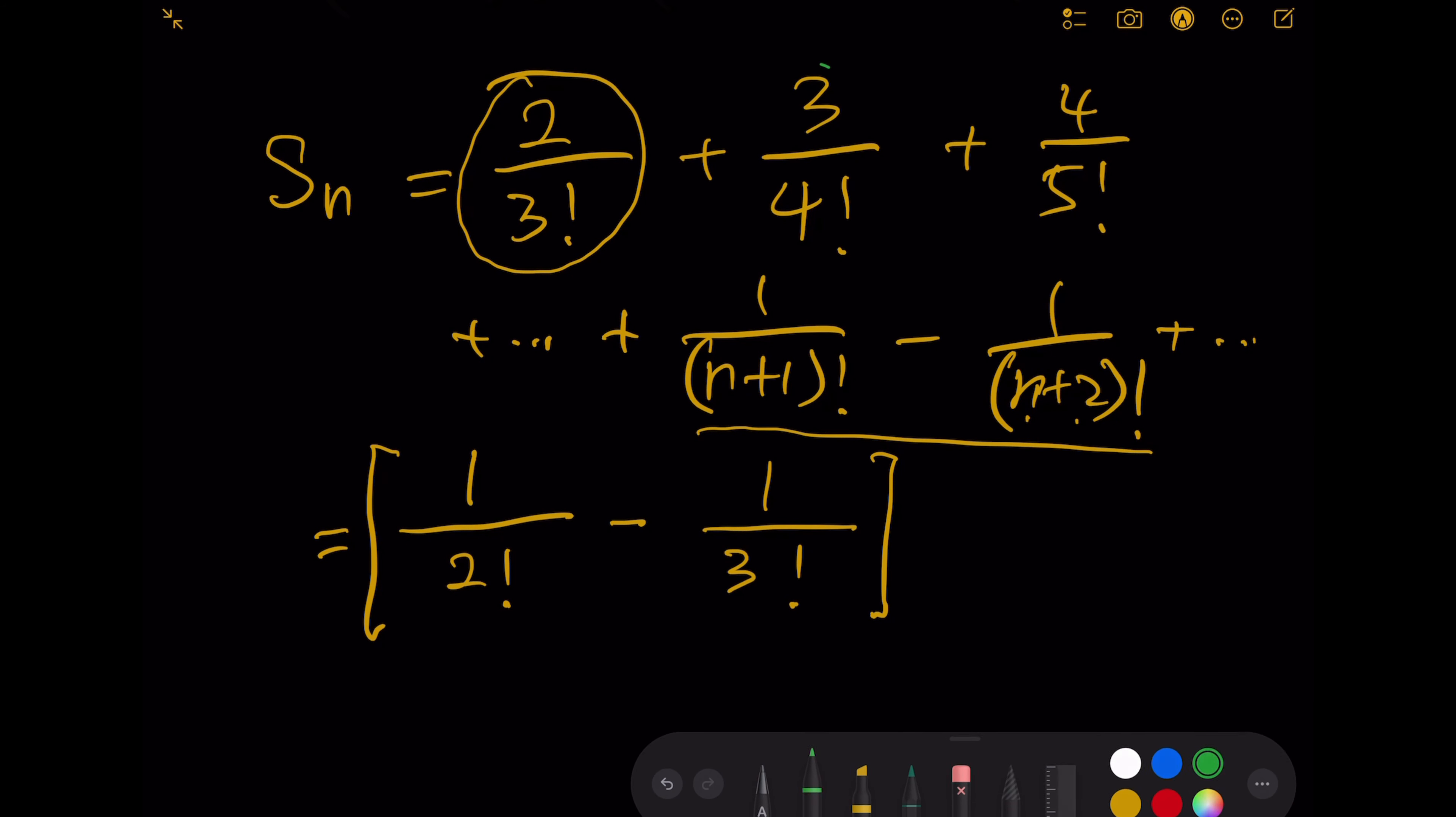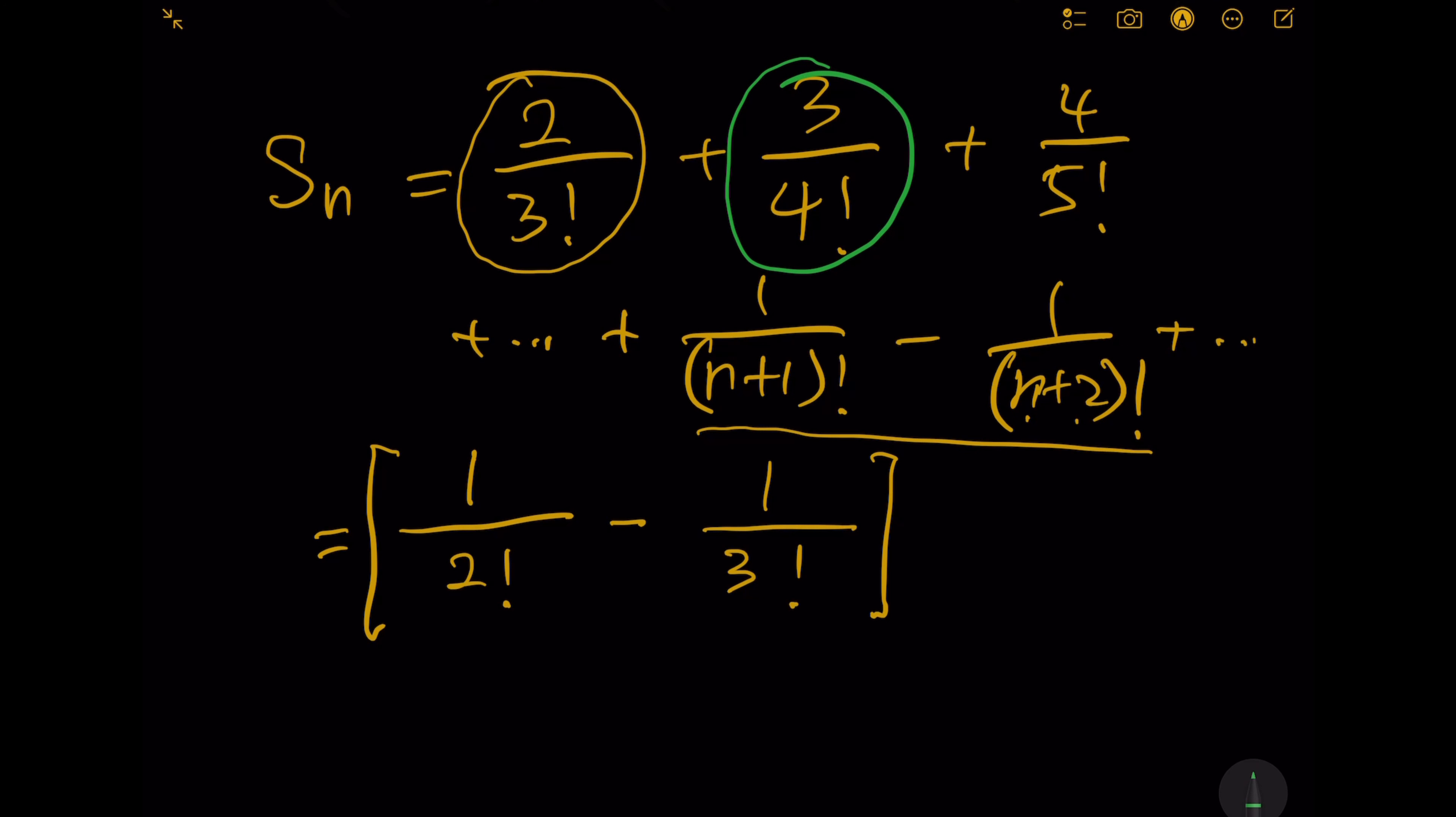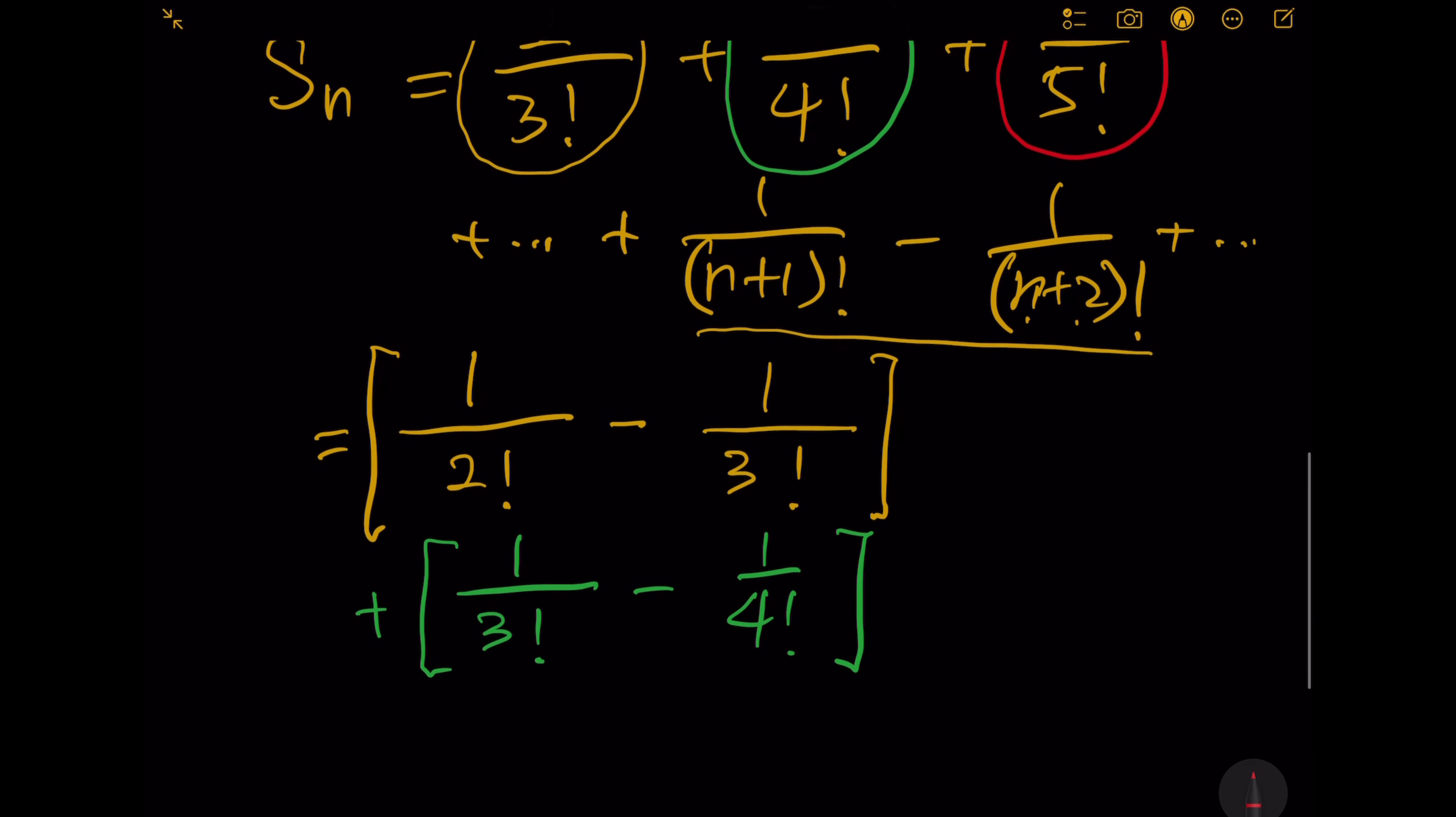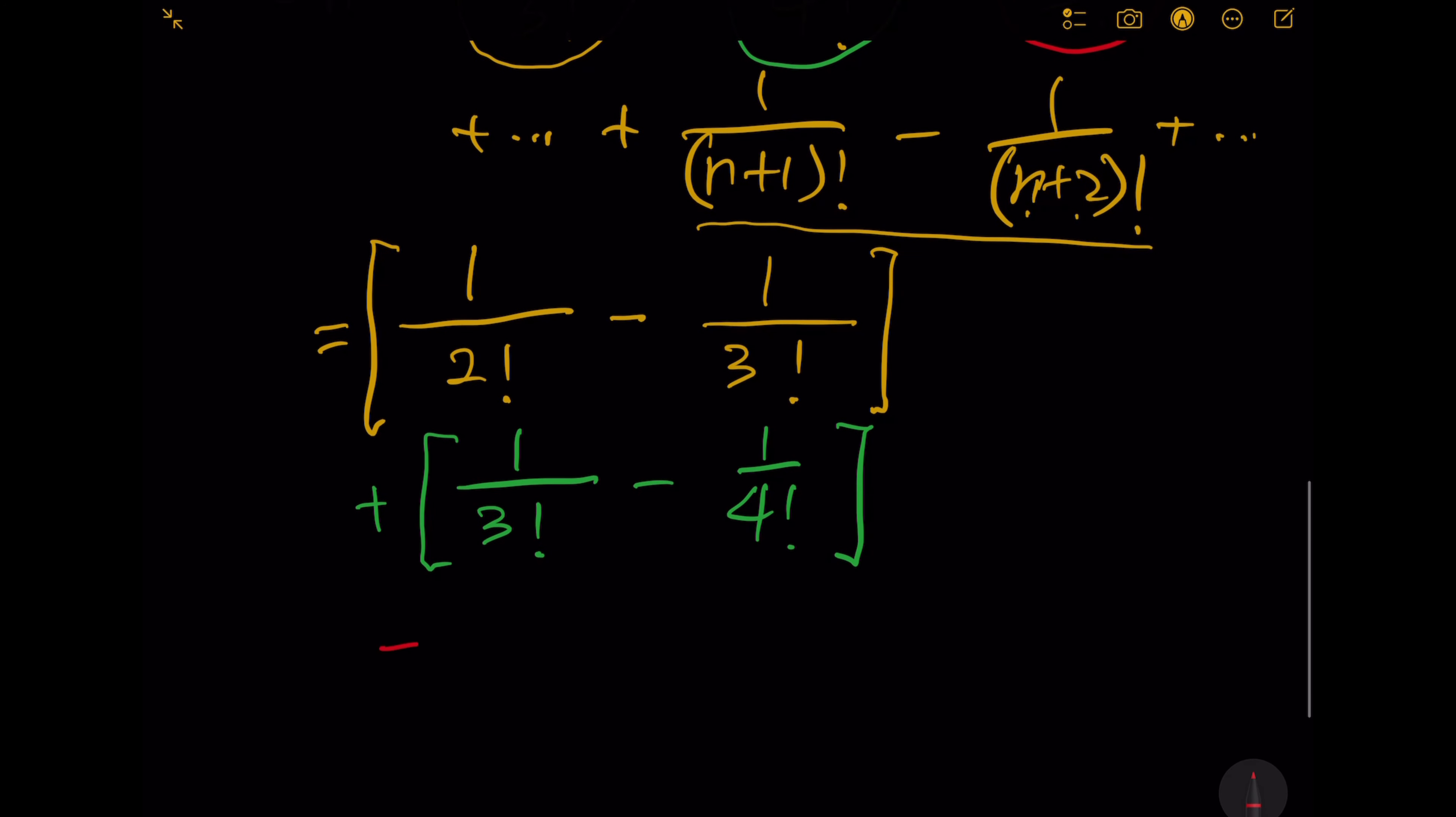Here is converted to 3 over 4 factorial, which becomes 1 over 3 factorial minus 1 over 4 factorial. And then 4 over 5 factorial becomes plus 1 over 4 factorial minus 1 over 5 factorial.